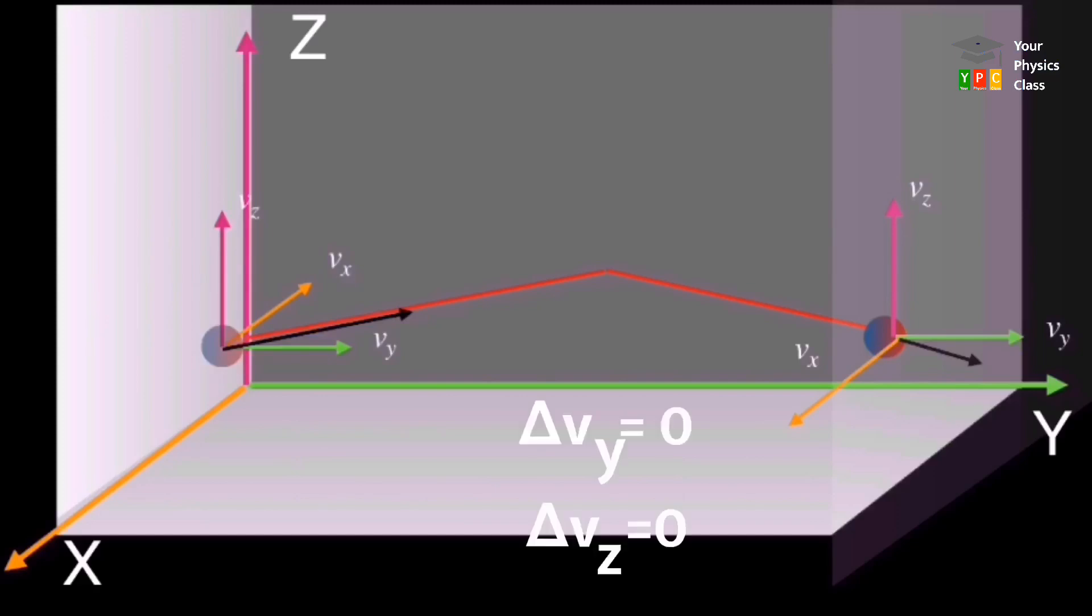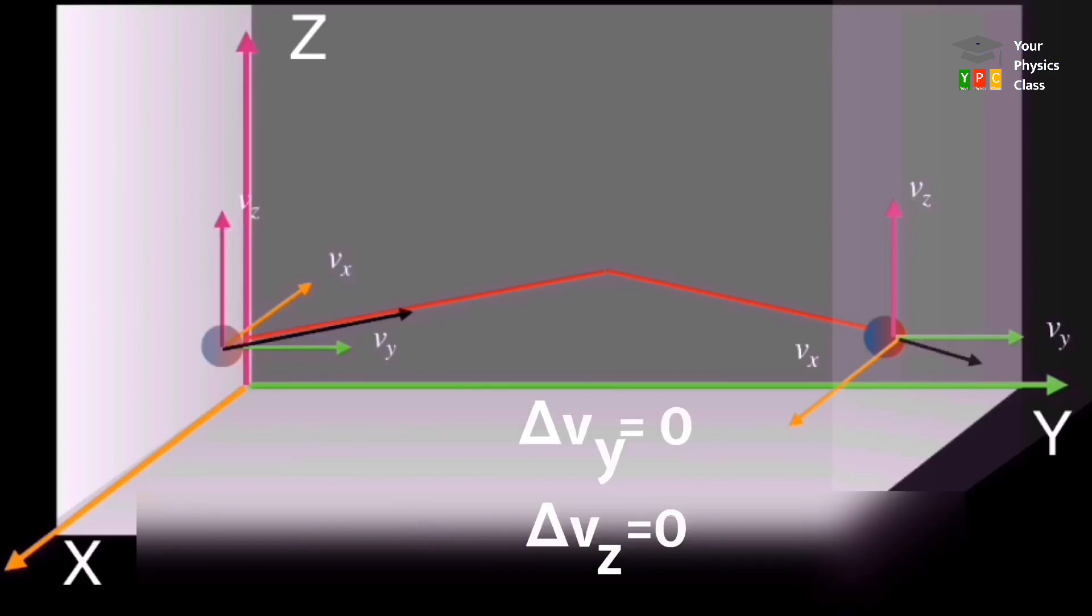Thus, Y aur Z component remains unchanged during collision with wall parallel to YZ plane. So, change in momentum of particle, sirf X component ke dwara hoga.